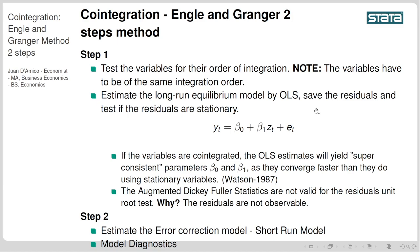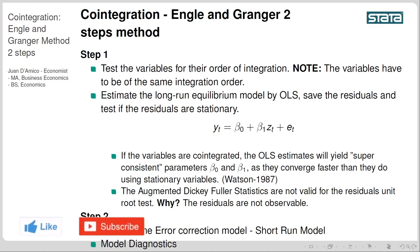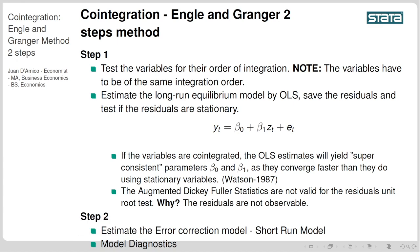Once we verify that, we're going to estimate the long-run equilibrium model using OLS, save the residuals, and test if those residuals are stationary. Estimating the long-run model is simply regressing y on your other variable z and a constant. If the variables are co-integrated, OLS estimates yield super-consistent parameters β₀ and β₁, as they converge faster than with stationary variables. The augmented Dickey-Fuller statistics are not valid for the residual unit root test because the residuals are not observable, so we use the statistic but not the standard critical values.